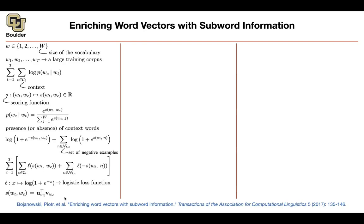But why did we do this recap? Because now, if you want to encode subword information, the question is where can you change things. You cannot change your vocabulary W, you cannot change your corpus, the probability and log probability are your objective function and can't change, the softmax can't change, and the logistic loss function stays the same. The only place you can change is your scoring function — the way you score two words. That's exactly what we are going to change to encode subword information.